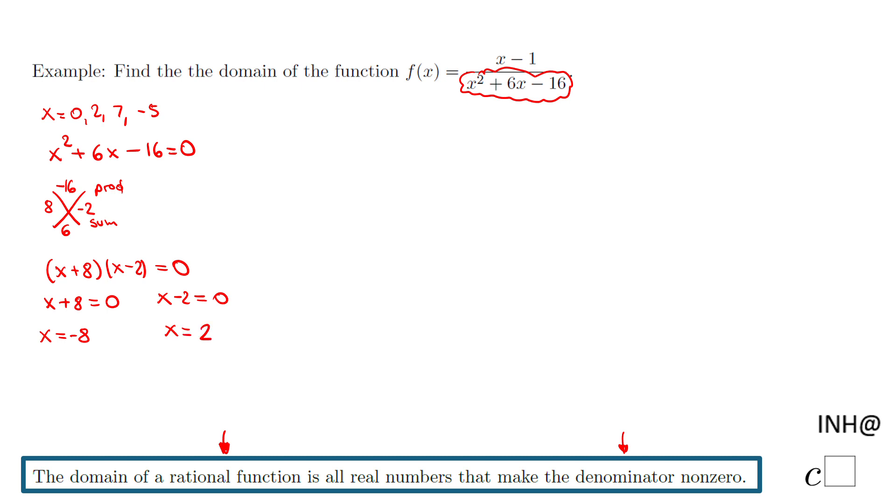These are the values for which this quadratic - the denominator of our rational function - equals zero. Look at what I'm doing here. I'm going to cross out the equal signs because I don't want that. I need it to be something else, not zero.